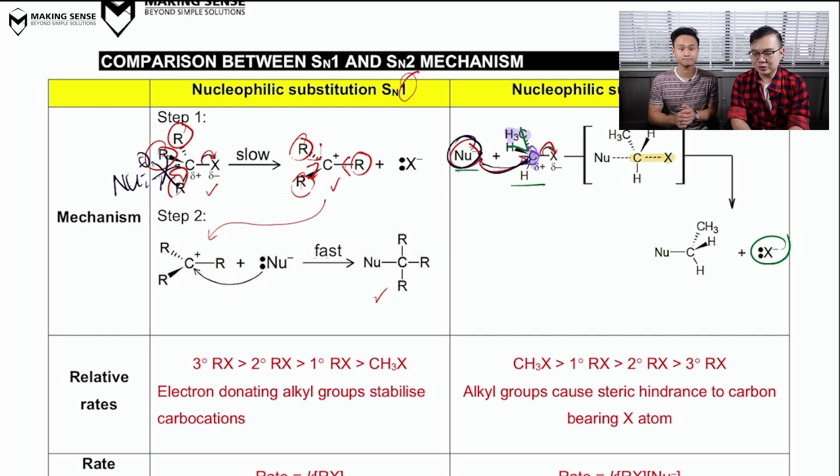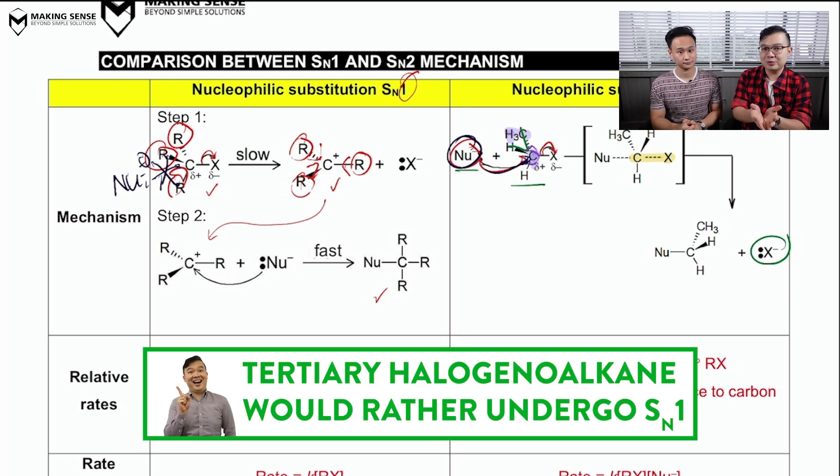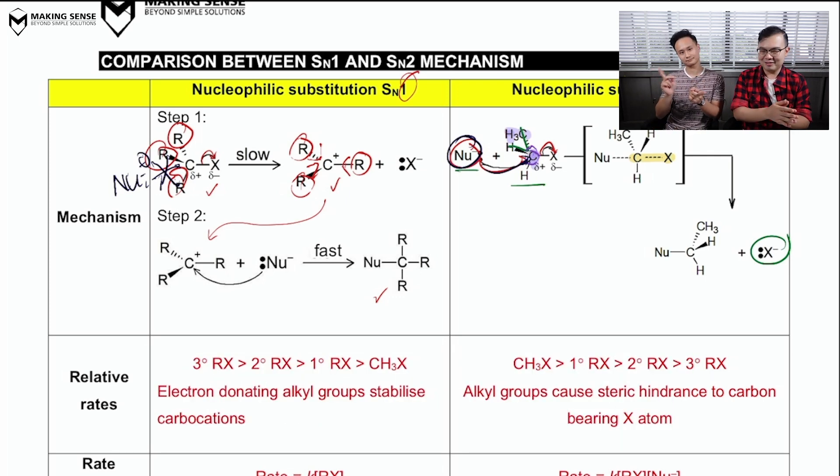So let me summarize this for you. So in general, if you have a primary halogenoalkane, you rather undergo SN2. Right. And if you have a tertiary halogenoalkane, you rather undergo SN1. So a big number becomes small, a small number becomes big, right?